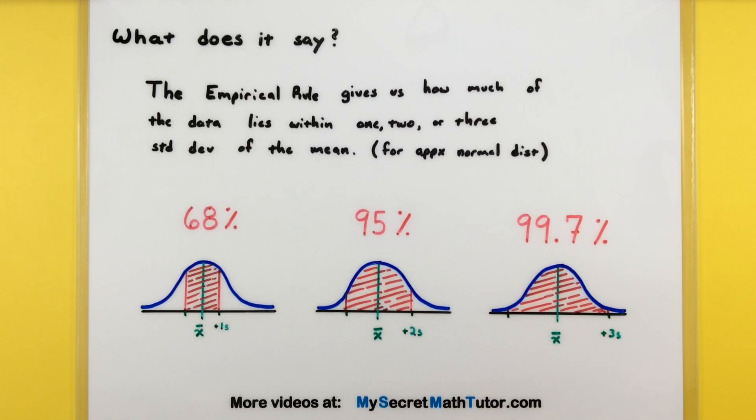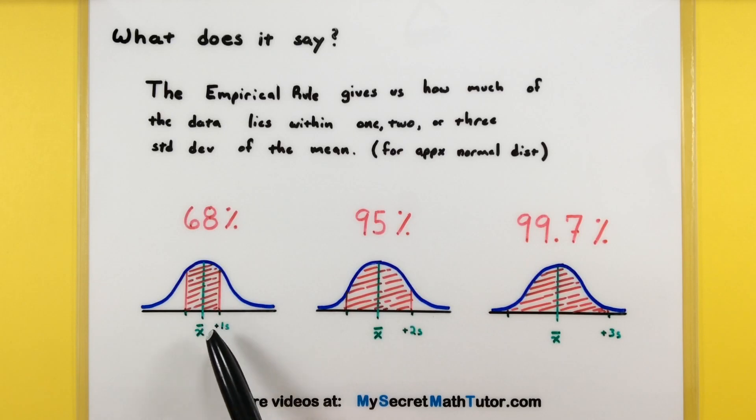The empirical rule gives us how much of our data lies within one, two, or three standard deviations of the mean. Visually, in the center of each of these normal distributions I have the mean, and then we're looking at one standard deviation on either side, two standard deviations on either side, or three standard deviations on either side.